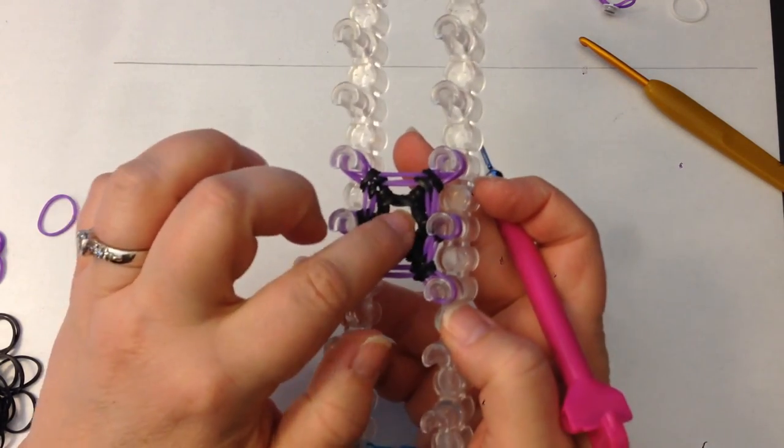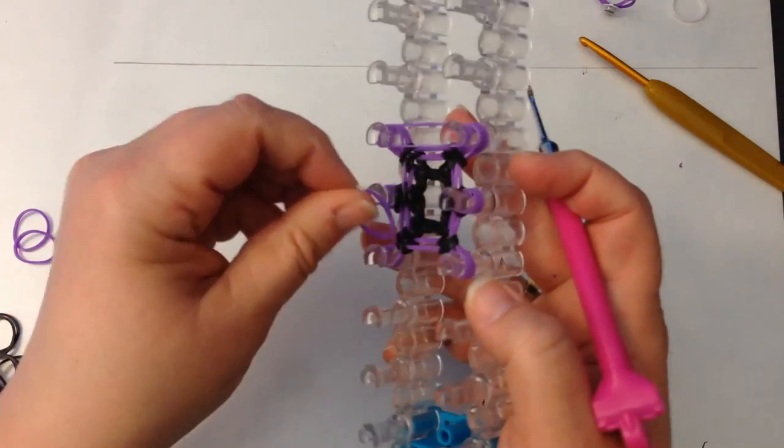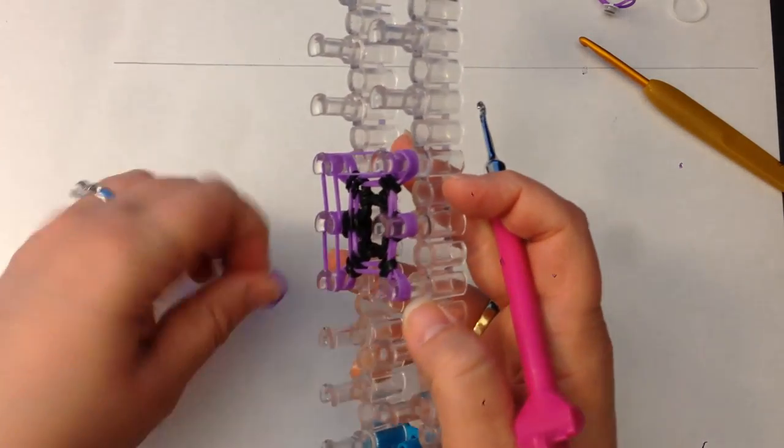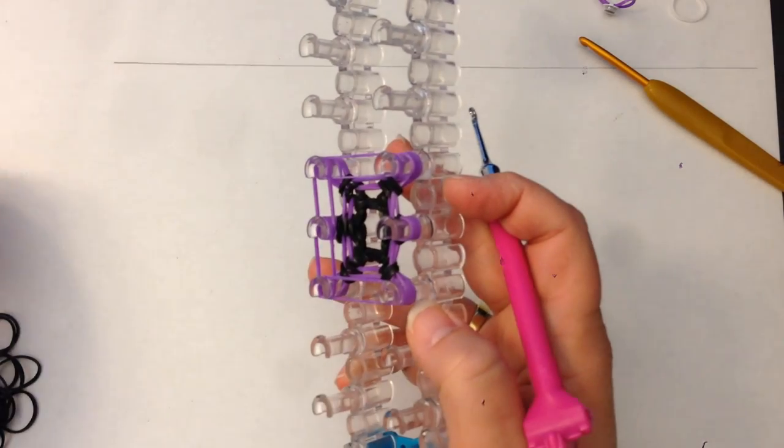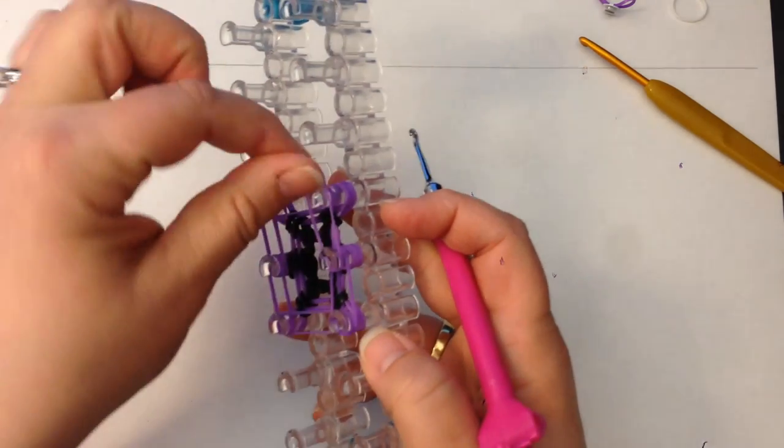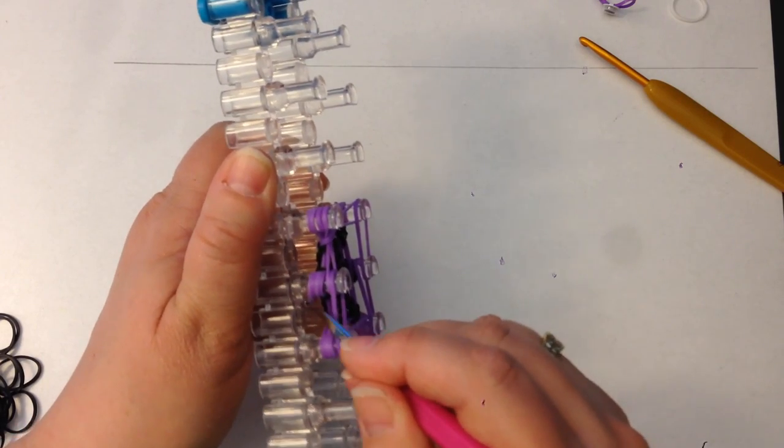Row number six. That's purple as well. Bottom two bands. These times, these ones are purple.